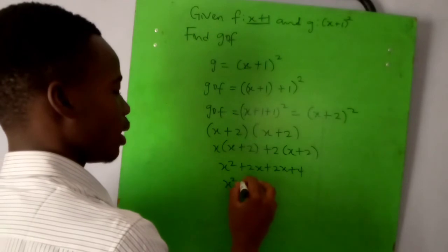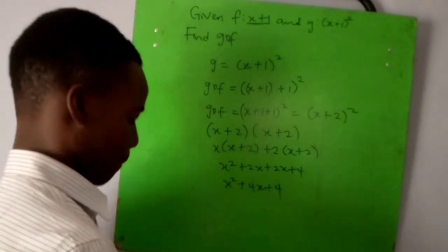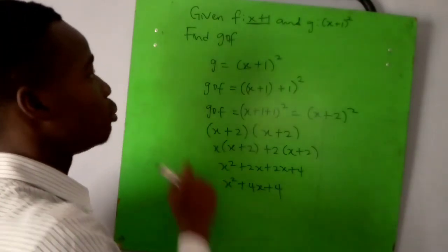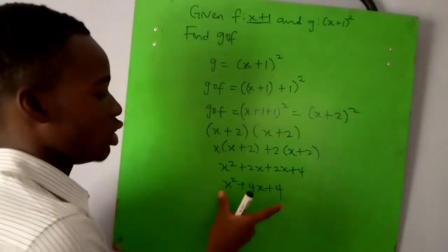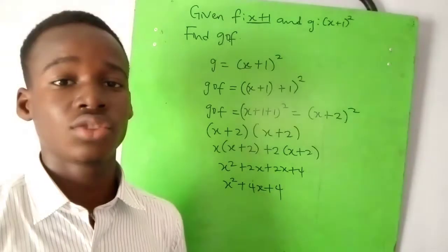So we have x^2 + 4x + 4. This will be g∘f, this is the g version of f. I'm sure you enjoyed this video.